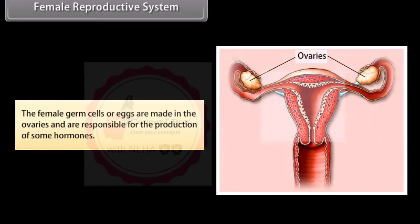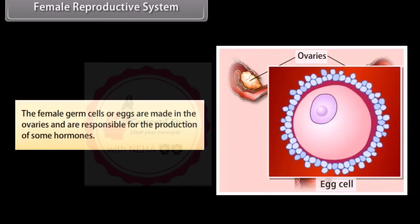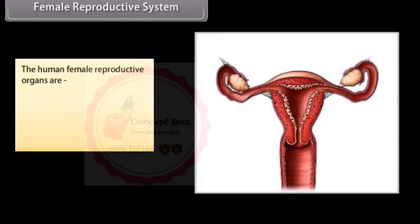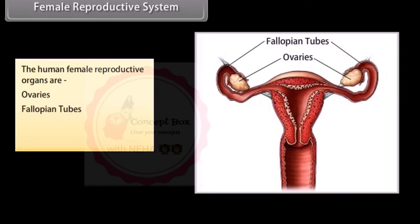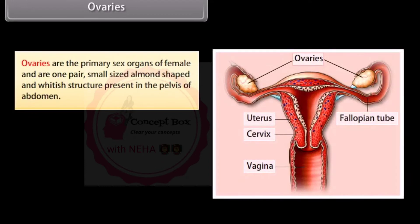The female reproductive system: female germ cells or eggs are made in the ovaries and are responsible for the production of some hormones. The human female reproductive organs are ovaries, fallopian tubes, uterus, and vagina.